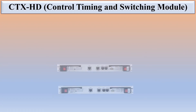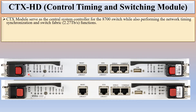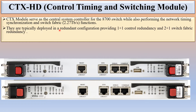CTX is the Control Timing and Switching module. There are 2 types: CTX and CTXHD, with differences similar to SMHD. The CTX module serves as the central system controller for the 8700 switches, performing network timing synchronization and switch fabric 2.27 Tbps function. They are typically deployed in a redundant configuration providing 1+1 control redundancy and 2+1 switch fabric redundancy. They are hot swappable.